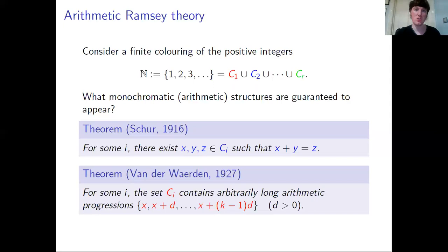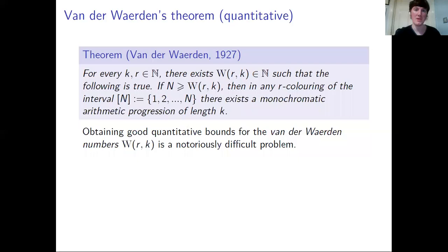As it turns out, you don't actually have to colour all of the positive integers before you start seeing these monochromatic structures appearing. This was proven by both Schur and van der Waerden. We have quantitative versions of their theorems. Van der Waerden proved that given positive integers k and r, there exists a quantity W(r,k) such that if you colour 1, 2, 3 all the way up to W(r,k) with r different colours, then you obtain a monochromatic k-term progression.